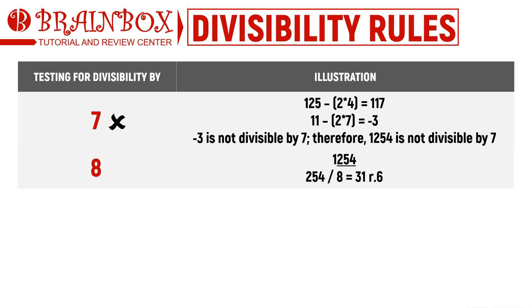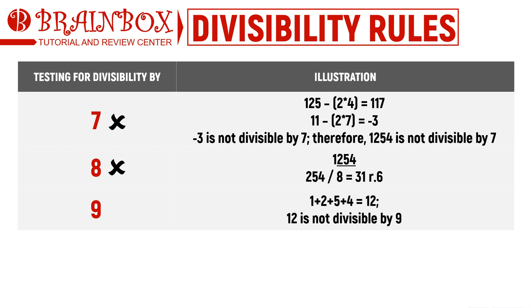Checking divisibility by 8 requires us to look at the last three digits: 254. Dividing 254 by 8 yields a remainder of 6, so 1,254 is not divisible by 8. Moving on to divisibility by 9, we use the sum of the digits, which is 12. Since 12 is not divisible by 9, 1,254 is not divisible by 9 either.